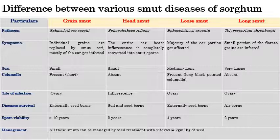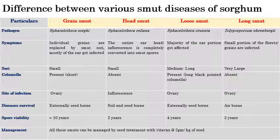Regarding sori size: in grain smut it is small; in head smut also small; in loose smut it is medium to long; and in long smut, very large sori can be observed. For columella: in grain smut, a short columella is present; in head smut, columella is absent; in loose smut, columella is present; and in long smut, columella is absent.